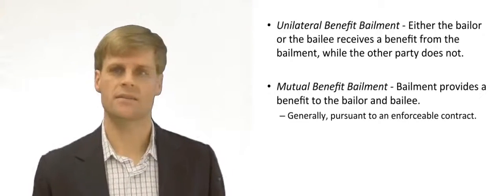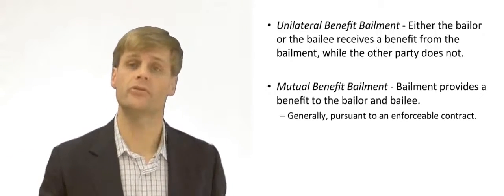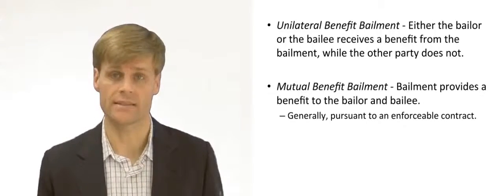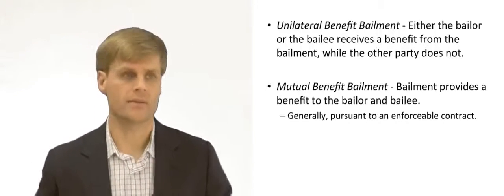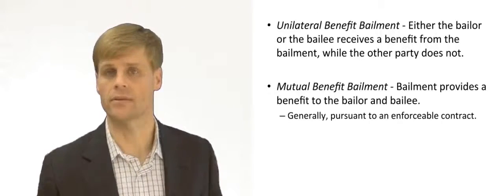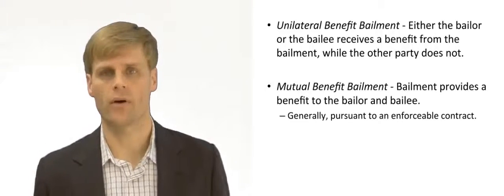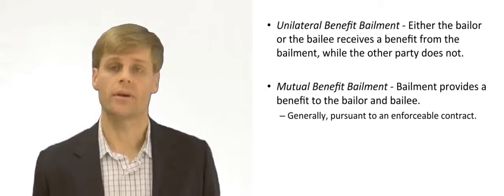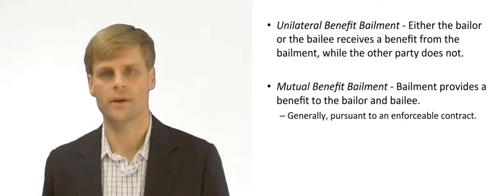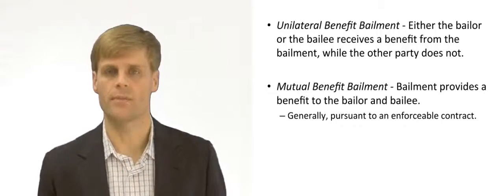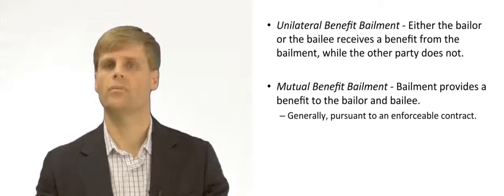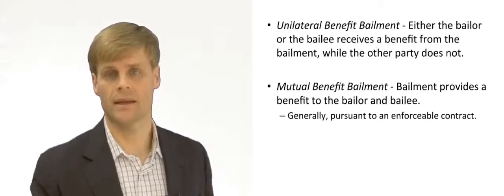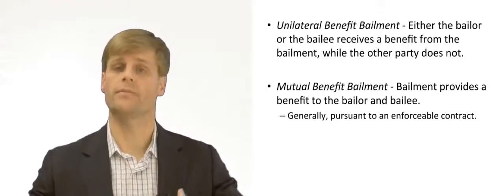The reason this distinction between a unilateral benefit bailment and a mutual benefit bailment is important is because it changes the level of rights and responsibilities between the parties. For example, generally the bailor has the right to receive the property back from the bailee at the end of the bailment. The bailee, unless the agreement somehow otherwise limits it, has the ability to possess and use the property during the time of the bailment. With a mutual benefit bailment, more contractual provisions apply — there could be any number of contractual terms governing the requirements on the bailor and the bailee.